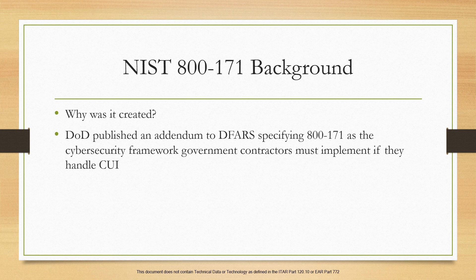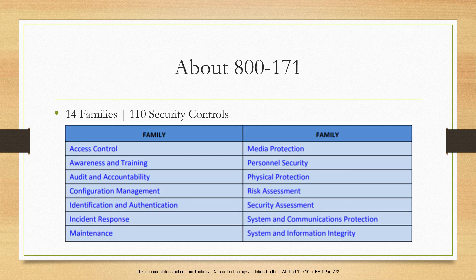Now that we have some background, let's dive into what's actually in the publication. NIST 800-171 consists of 14 control families, and among those 14 control families there's a total of 110 security controls. Let's jump into these families one by one and discuss what they're all about and how many controls are in each.